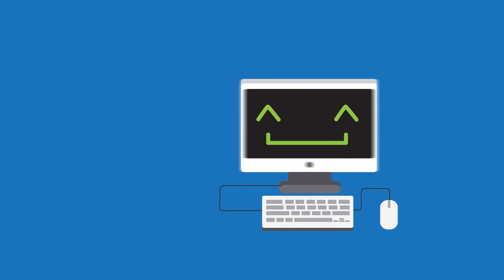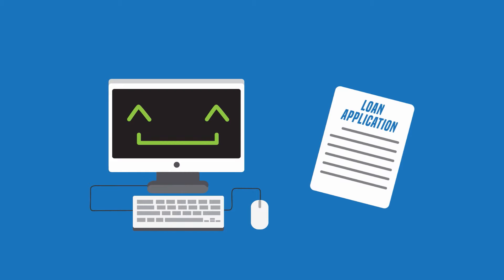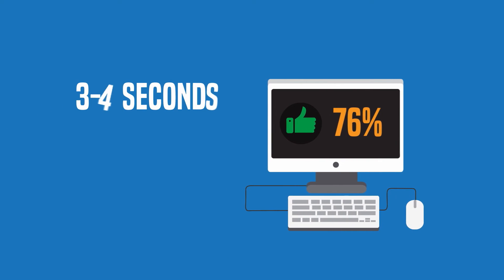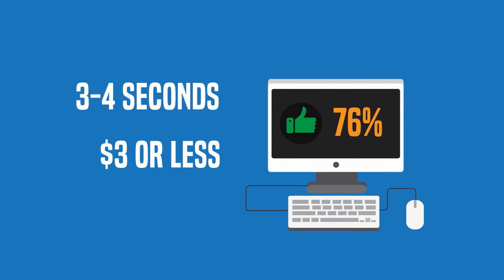Once our system is optimized, whenever you send us a loan applicant's information, we'll research their identity and full credit history, and show you exactly how likely they'll be able to pay back their loan. It takes three to four seconds, and costs three dollars or less per applicant.